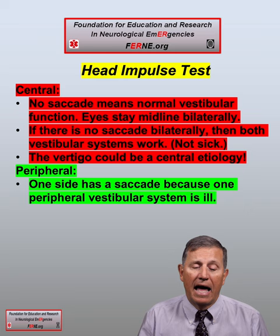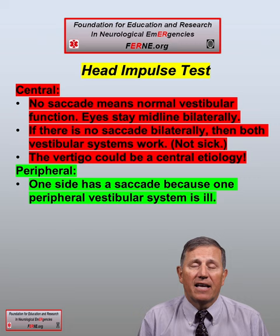If there is no saccade on either side, this suggests a central etiology because no peripheral etiology has been proven. In other words, no peripheral side is sick. For more information, go to FERN.org. Thank you.